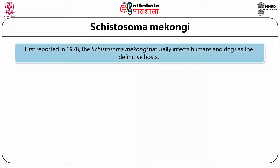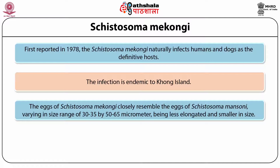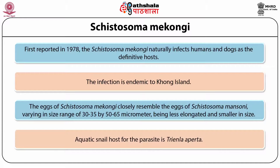Cystosoma mekongi, first reported in 1978, naturally infects humans and dogs as definitive hosts. The infection is endemic to Khong Island. The eggs closely resemble those of Cystosoma mansoni, varying in size of 30 to 35 by 50 to 65 µm, being less elongated and smaller. The accurate snail host is Tricula aperta. Adult worms live in the mesenteric veins.